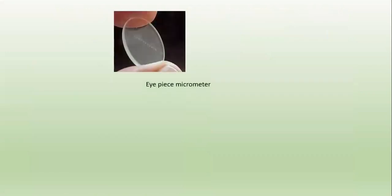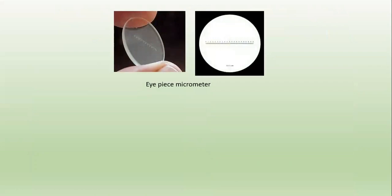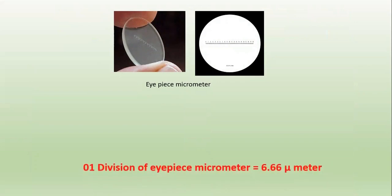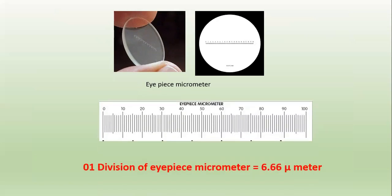Friends, this is your eyepiece micrometer, and here the scale is there, which is to be calibrated by utilizing a stage micrometer. After the calibration, we see that one division of the eyepiece micrometer is equal to 6.66 micrometers. This is your eyepiece micrometer scale. So let's see how to measure the length and diameter of the microscopical particles.